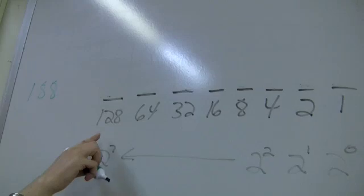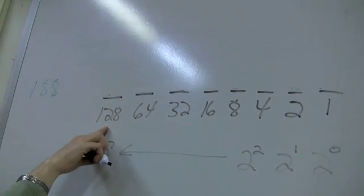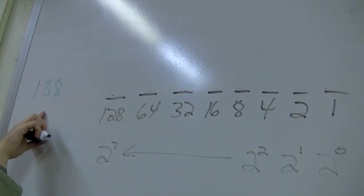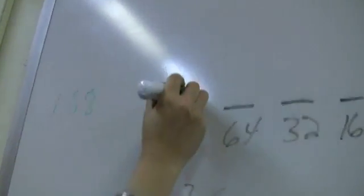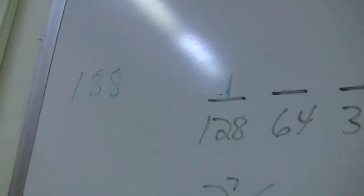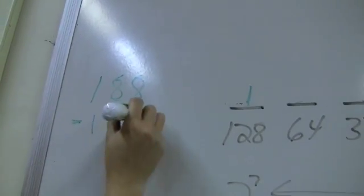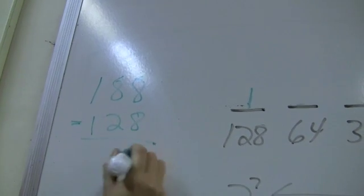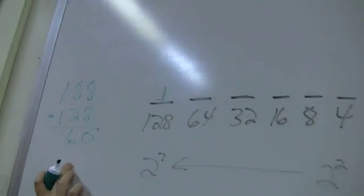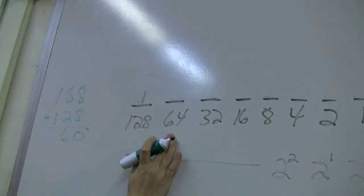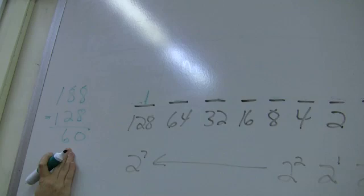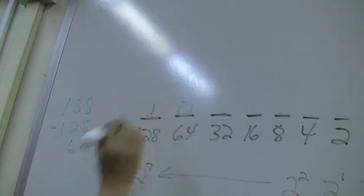Now I start with the 128 and I say, does 128, this number, can it fit inside of 188? And the answer is yes. So it gets a 1. I then would subtract the 128. That leaves me with 60. Then I come back to 64. Does the number 64 fit inside of 60? No, it doesn't. So it gets a 0.